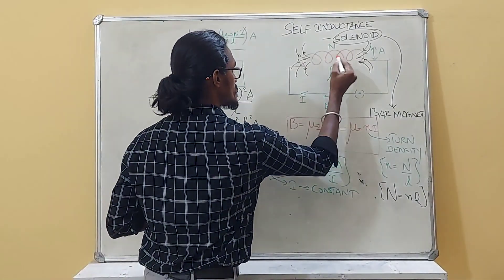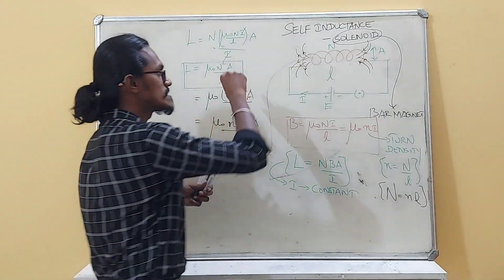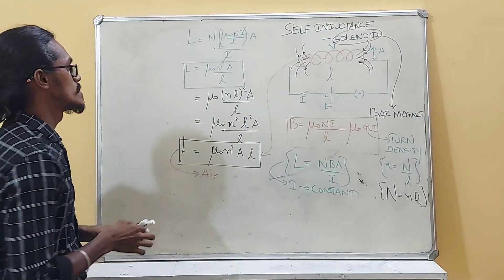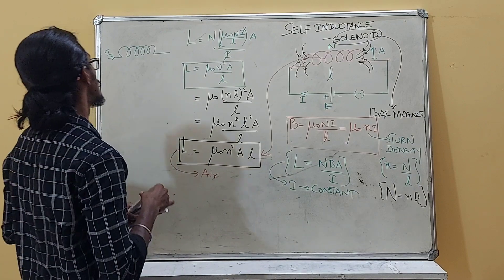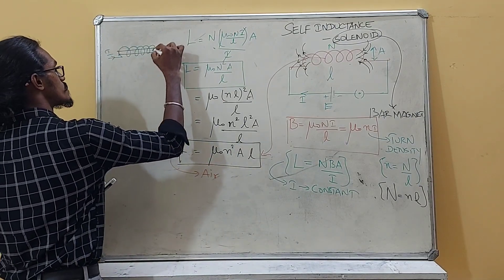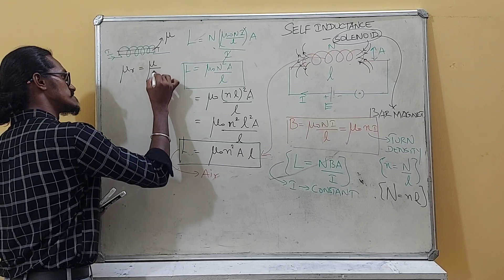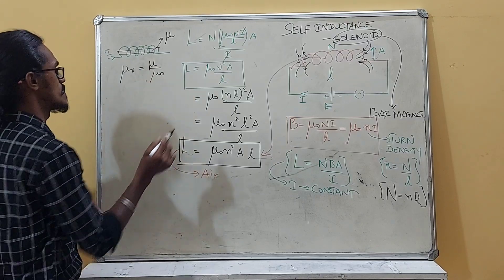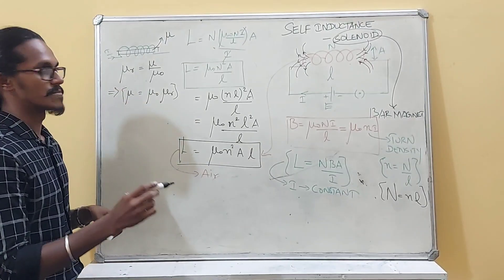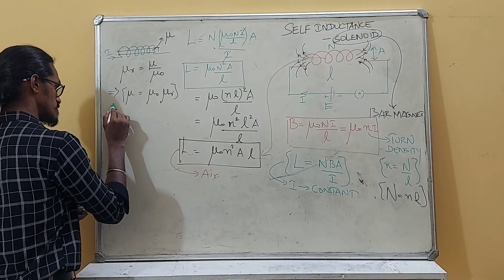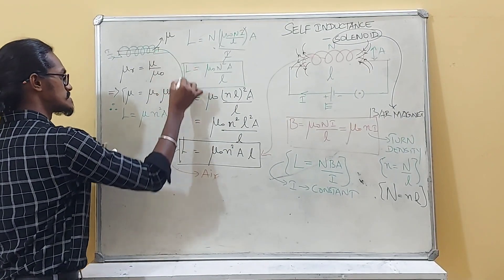When the medium between the solenoid windings is air, this formula applies. But what if a material is inserted inside the solenoid? Whenever we insert a material of permeability μ, using the relation μᵣ = μ/μ₀, we get μ = μ₀μᵣ. Therefore, the self-inductance becomes L = μN²Al = μ₀μᵣN²Al.